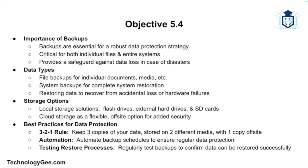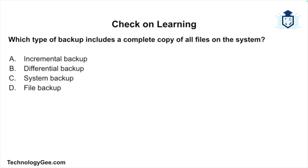To summarize, backups are a vital part of any data protection strategy. Whether you're backing up important files or your entire system, it's essential to understand the types of backups, where to store them, and how to restore your data if disaster strikes. We covered file backups, system backups, and how to restore data, as well as storage options including flash drives, external hard drives, SD cards, and cloud storage. By following best practices such as the 3-2-1 rule, automating backups, and testing your restore processes, you can ensure your data will always be protected.